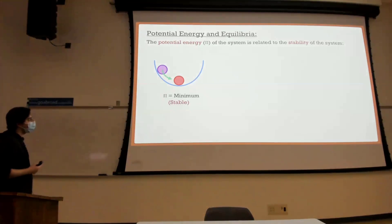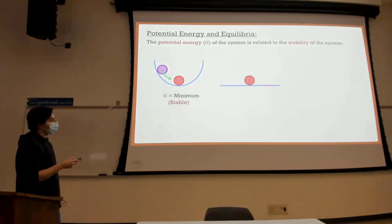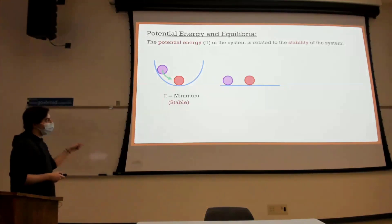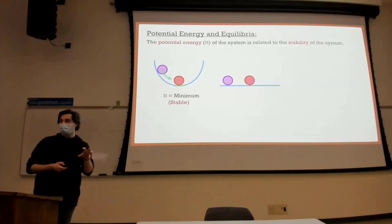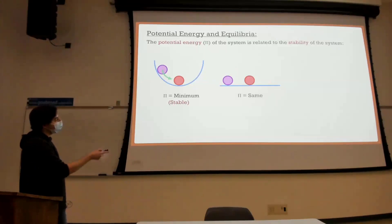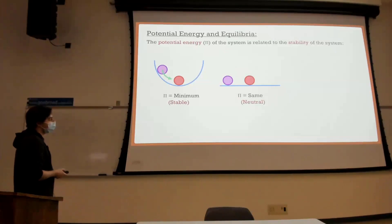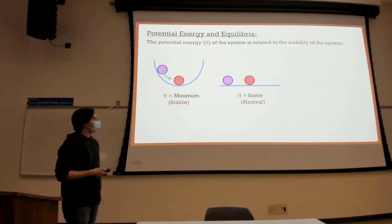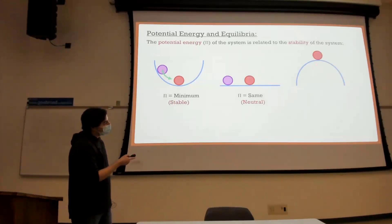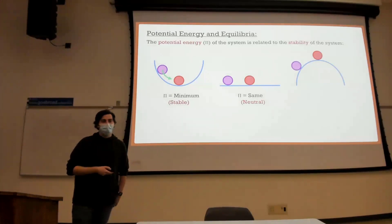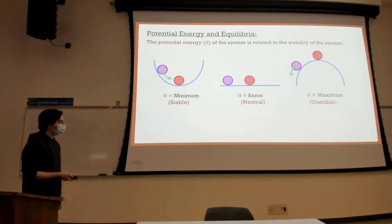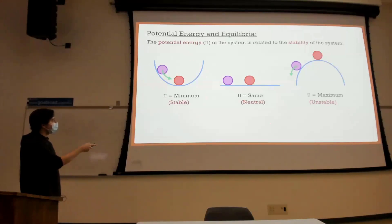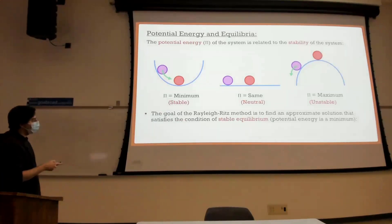We have different types of equilibrium. On a flat surface, if I move the ball and let go it finds equilibrium again but in a different location — the potential energy is constant, which is neutral equilibrium. If I take a ball on an inverted surface and move it a little bit to the left and let go, the ball rolls away — that's unstable equilibrium with maximum potential energy. Of course we want the stable scenario, and in this case we want minimum potential energy.